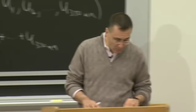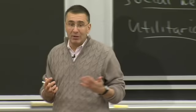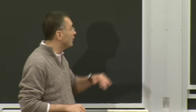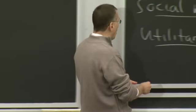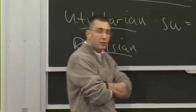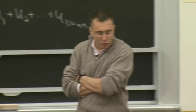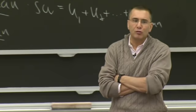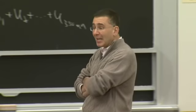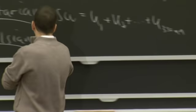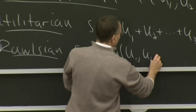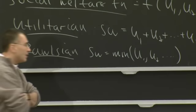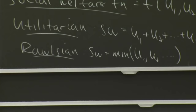The utilitarian function is not even considered a particularly left-wing social welfare function. Those on the philosophical left prefer something like the Rawlsian criteria, named for the philosopher John Rawls. The Rawlsian social welfare function says society's goal should be to maximize the well-being of its worst-off member. A fair and just society is one which maximizes the well-being of the worst-off person. So social welfare equals the min of u1, u2, dot dot dot — it's a max-of-min criteria.